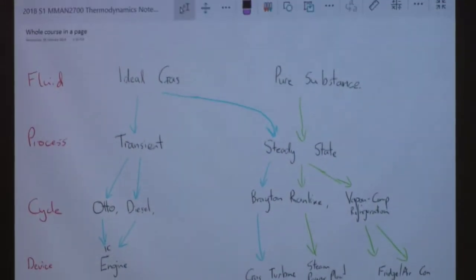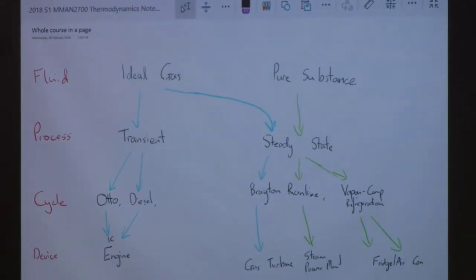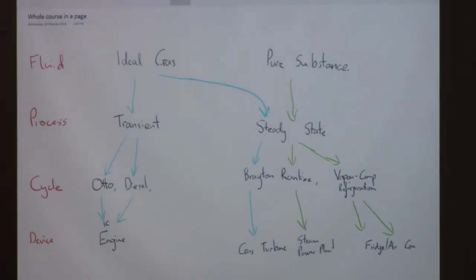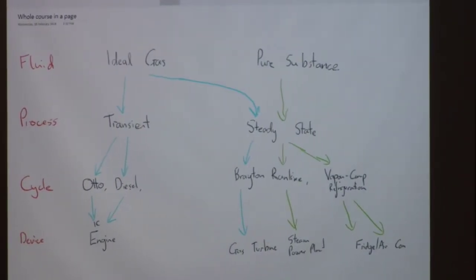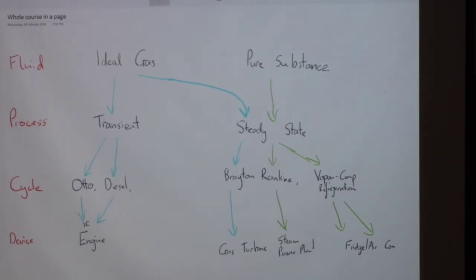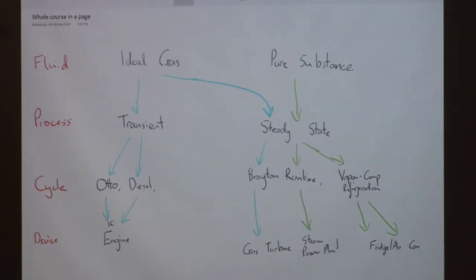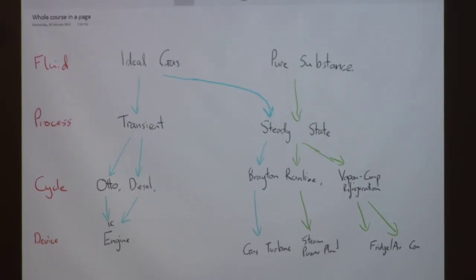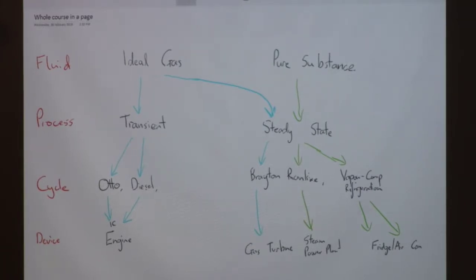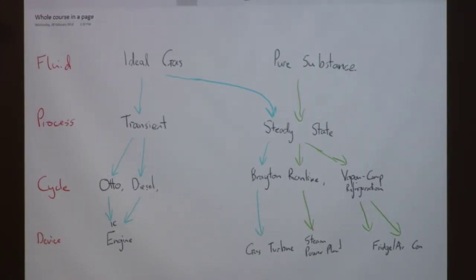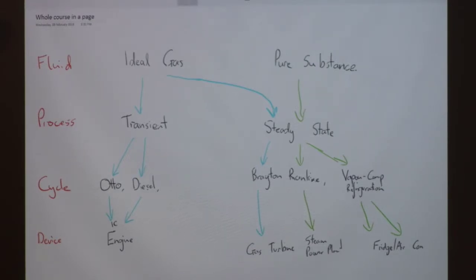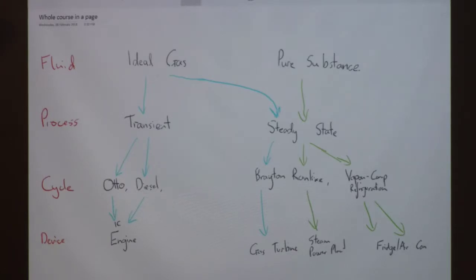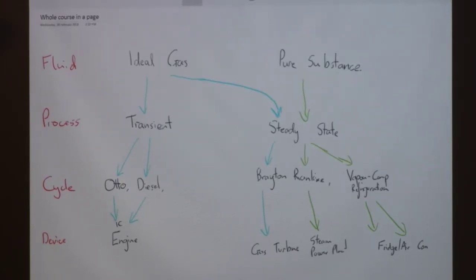Underlying those devices are theoretical cycles named after, with the exception of one on the right, named after the person who invented them. So guy called Otto, last names, all guys, sorry, hundreds of years ago. Girls weren't participating much in this kind of space. Anyway, guy named Otto, guy named Diesel. Diesel is the last name of the person who invented the use for the fuel. Guy named Brayton, guy named Rankine and then the vapor compression refrigeration cycle. So they're the theoretical cycles that back up the devices that we want to use.